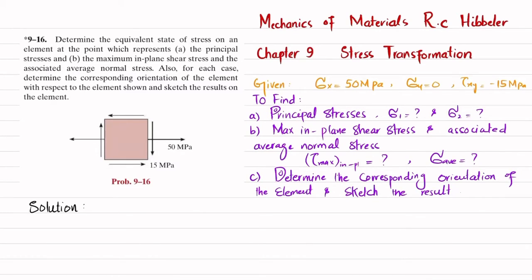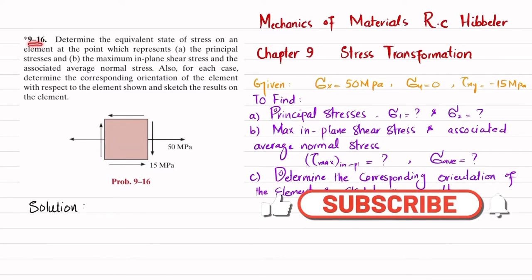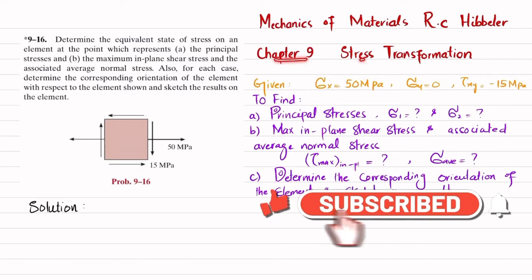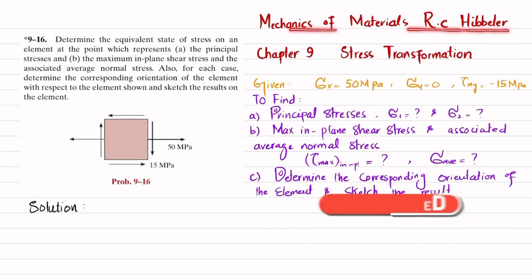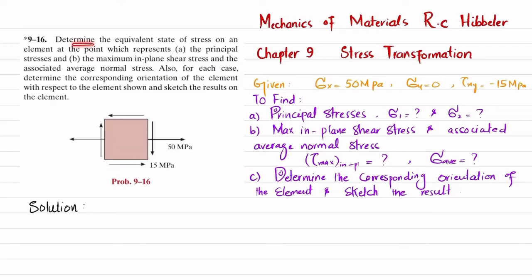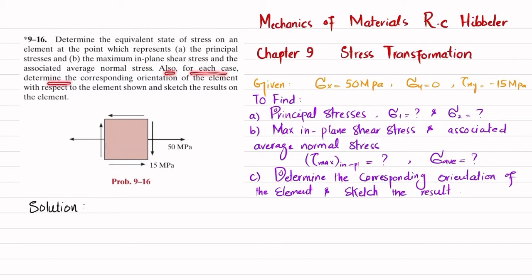Welcome back. Problem 9-16. This problem is taken from chapter number 9, that is stress transformation, and the book name is Mechanics of Materials by R.C. Hibbeler. The statement is: determine the equivalent state of stress on an element at the point which represents the principal stresses, maximum in-plane shear stress and associated average normal stress. Also, for each case, determine the corresponding orientation of the element with respect to the element shown and sketch the result on the element.